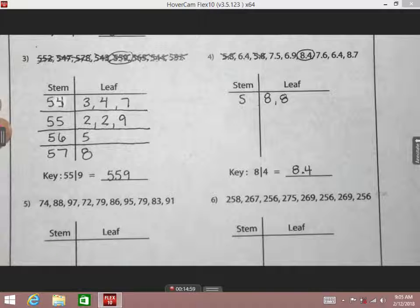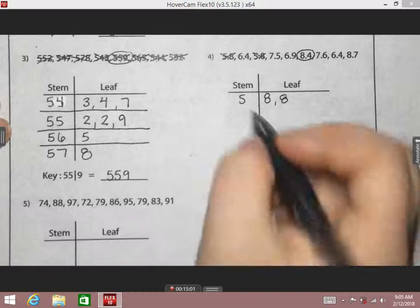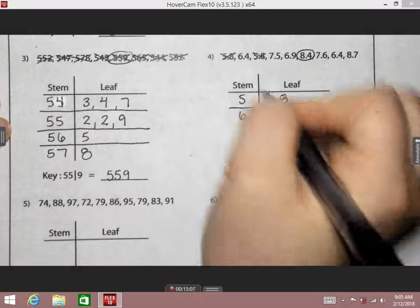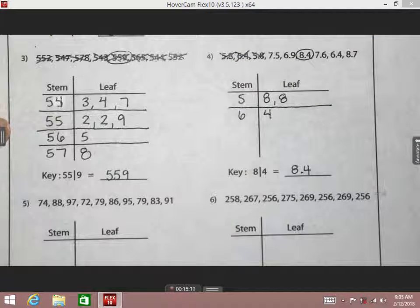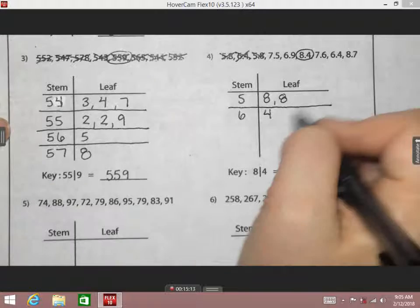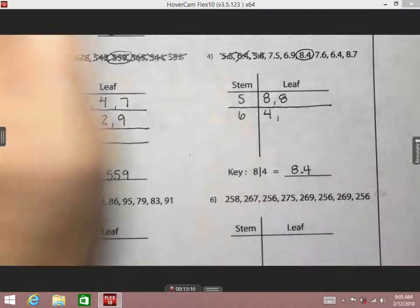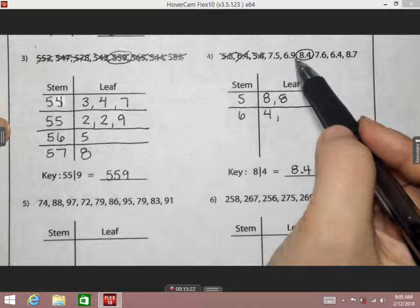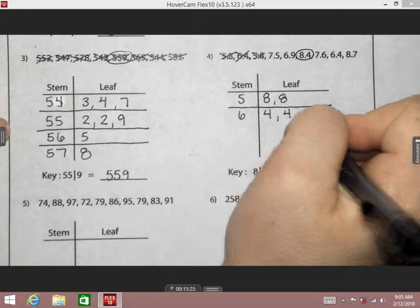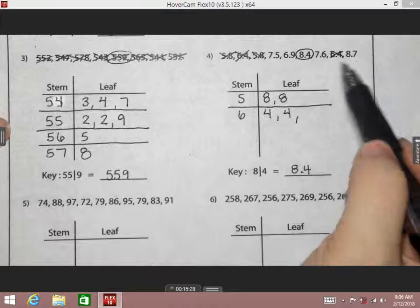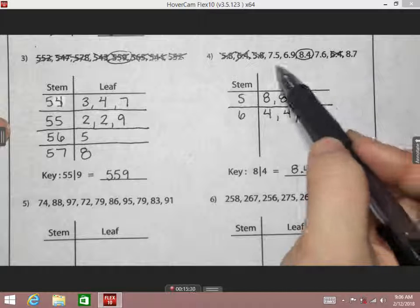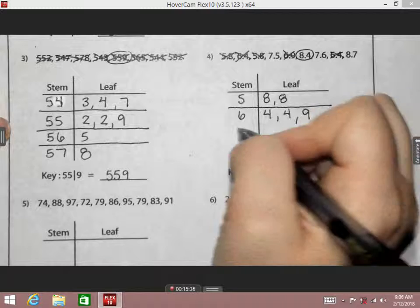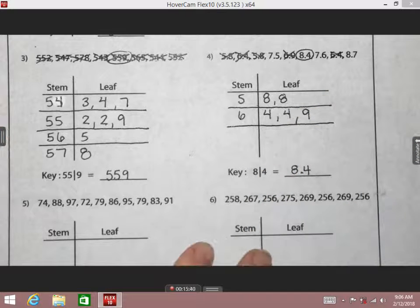What's my next stem? 6. Give me a leaf. 4. So that gives me 6.4. Another leaf. We have a 9. Is there a smaller one I can put up there? 4 again. So I'm going to do 4 again. Is there another one that I need besides the 9? I'm going to go ahead and put that 9. What's my next stem going to be? 7. What's a leaf that needs to go with my 7? 5. What's another leaf that needs to go with my 7? 6.